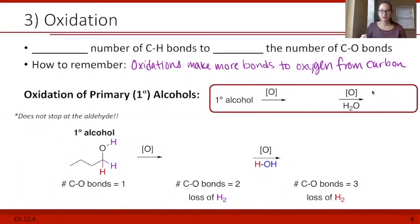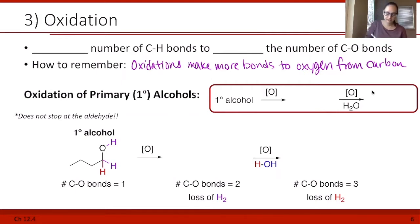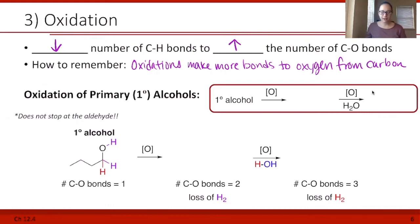We are going to do our third reaction now. This is the oxidation reaction. In this reaction, we're going to be talking about the number of CH bonds versus CO bonds. When you oxidize an alcohol, you're going to decrease the number of CH bonds but increase the number of CO bonds. They're opposites of one another. Oxidations make more bonds to oxygen from carbons.